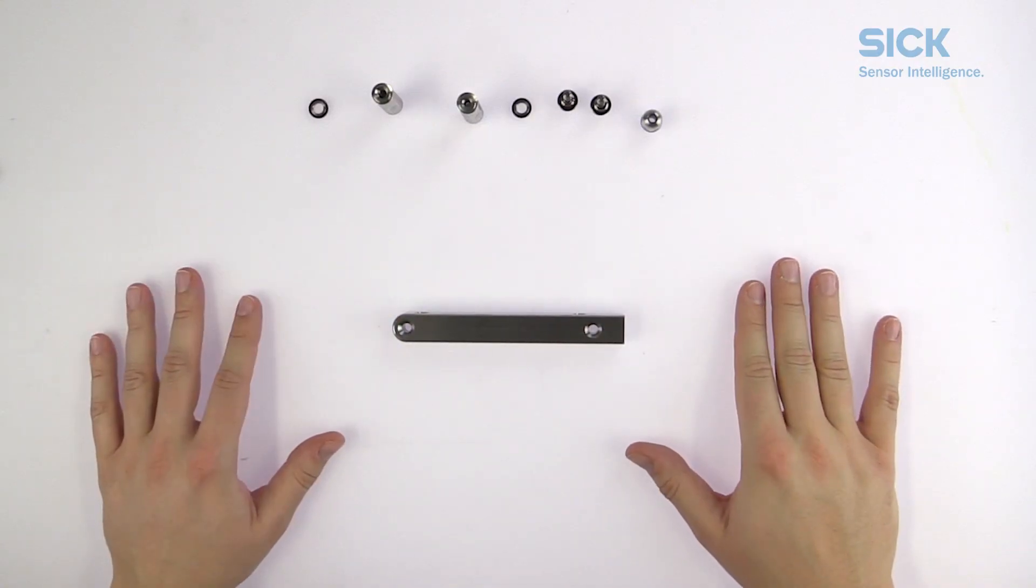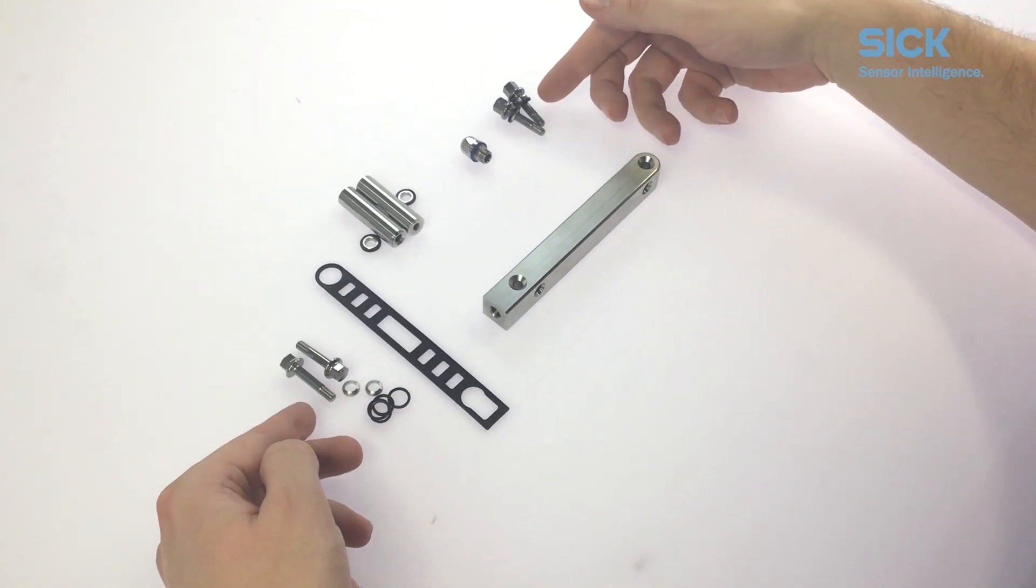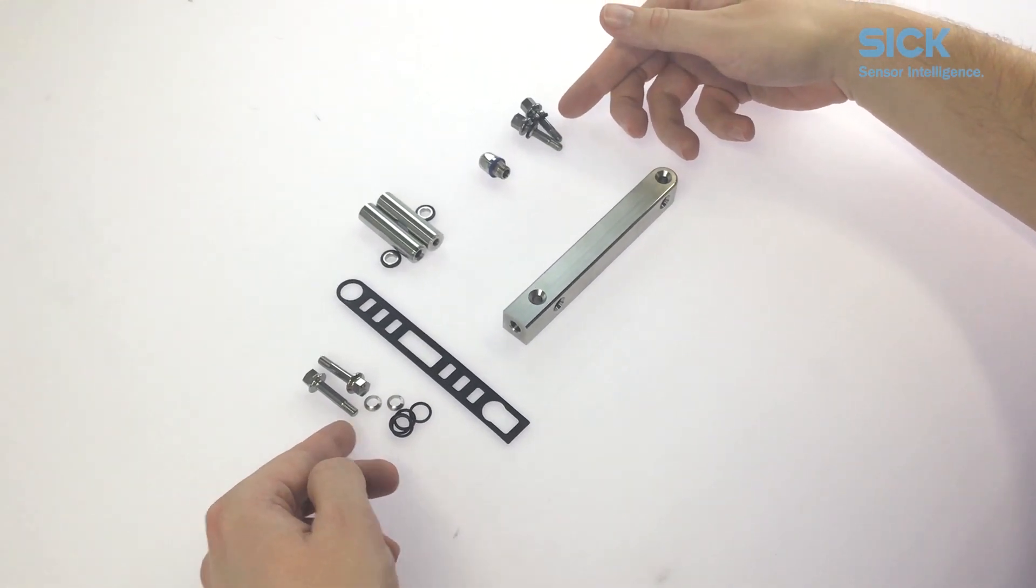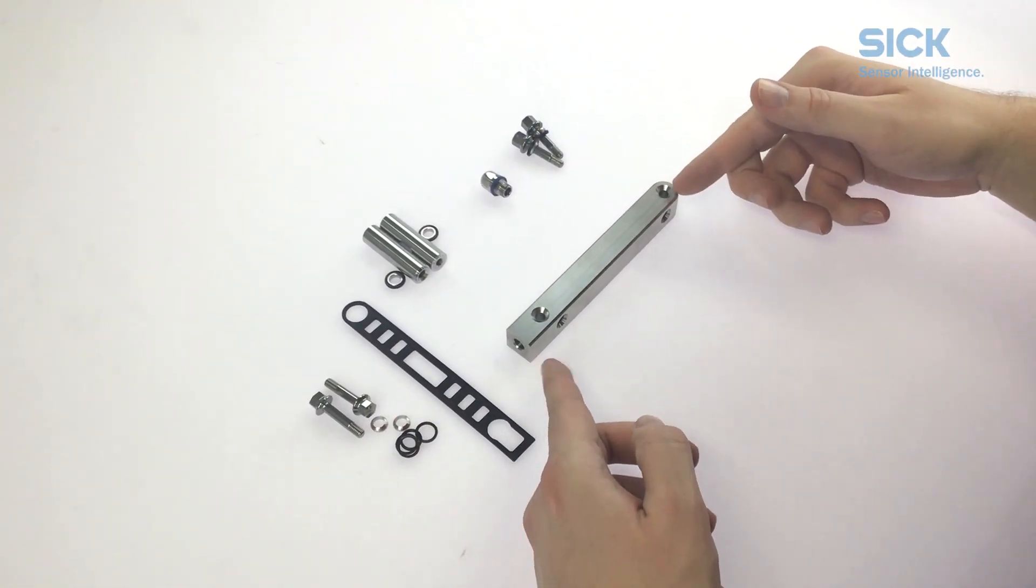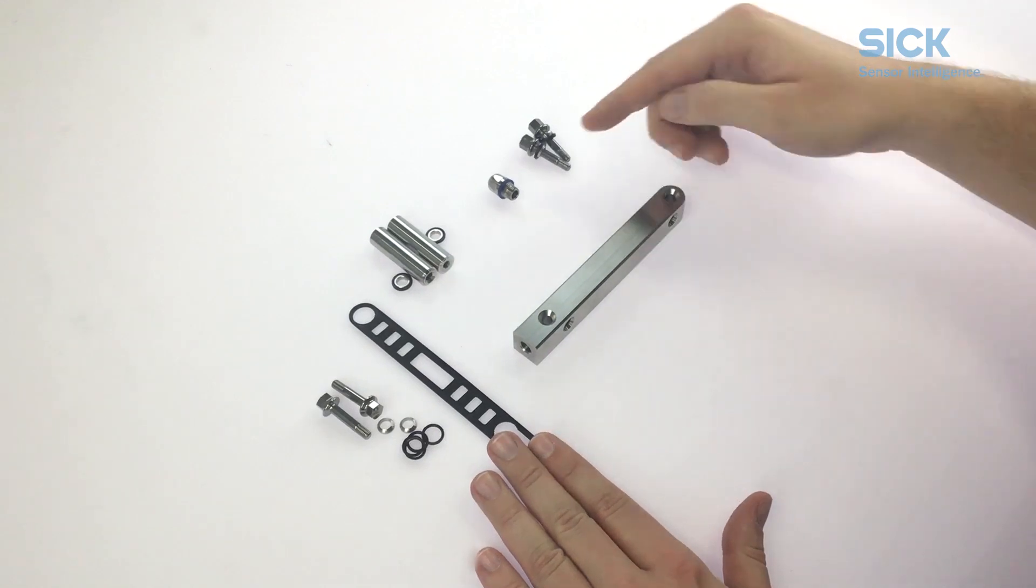And that's already it. All in all there are four M525 screws, each with a ball socket and a spacer seal, and the bracket base with the rubber seal and the cable gland.